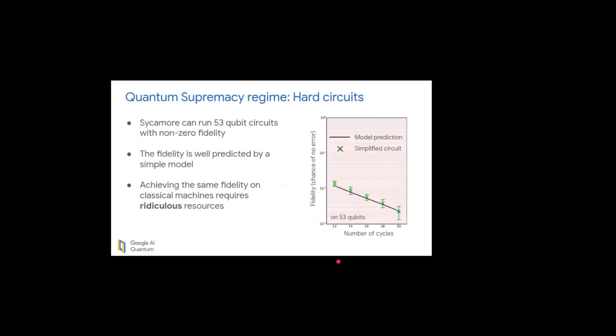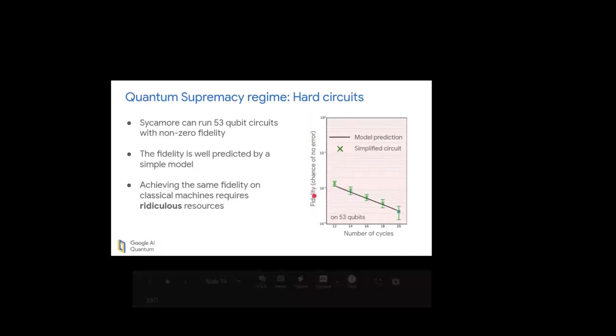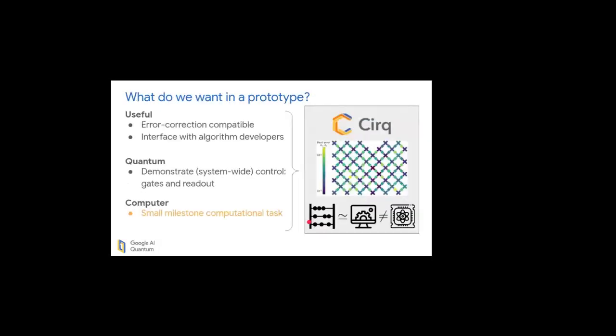So the take-home message here is we have our processor that we've named Sycamore. It can run 53 qubit circuits with non-zero fidelity. And okay, that sounds a little bit funny. I'm saying that the quantum computer gives me the right answer at all, ever. In fact, this algorithm is very sensitive to errors in the quantum computer. And you do see that the numbers on this y-axis are pretty small. That said, these are the numbers that were predicted from those gate errors that we measured at the beginning.